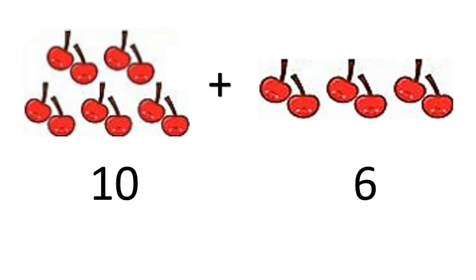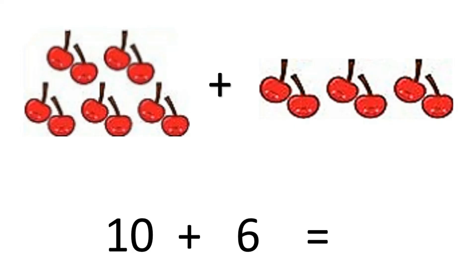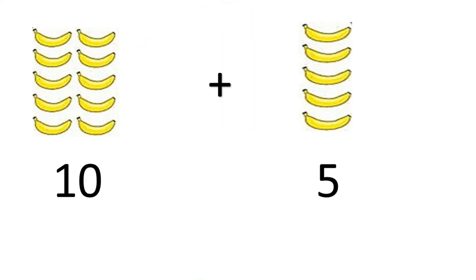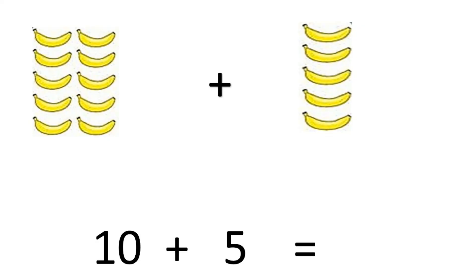Now you try. I have 10 cherries plus 6 cherries. How many cherries do I have all together? Count them in the same way. How many bananas do I have all together? Count them in the same way. 10 plus 5 equals 15. Did you get that one correct? Good try, everyone.